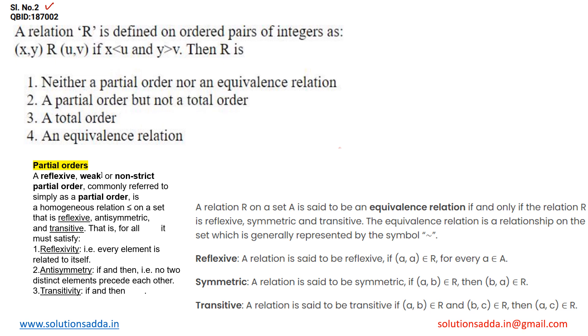The question says a relation R is defined on ordered pairs of integers as (x,y) R (u,v) if x < u and y > v. Then R is what type of relation? The options are: neither a partial order nor an equivalence relation, partial order but not a total order, total order, and equivalence relation.